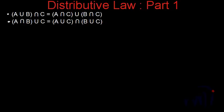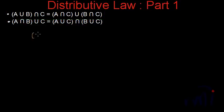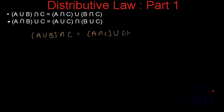Here we are talking about distributive laws in set theory. In this video, we are going to learn the written proof of these two distributive laws. The first law says A union B whole intersection C is equal to A intersection C union B intersection C.